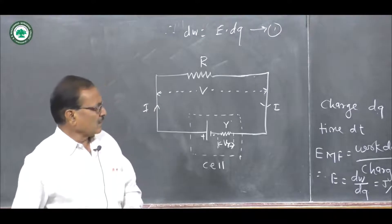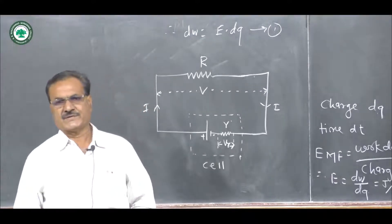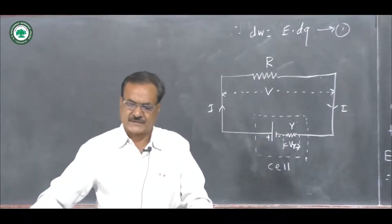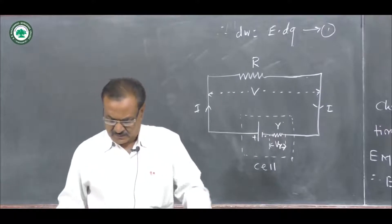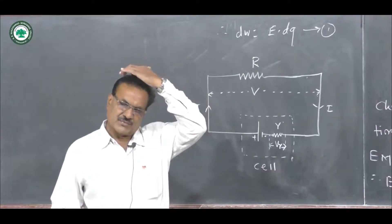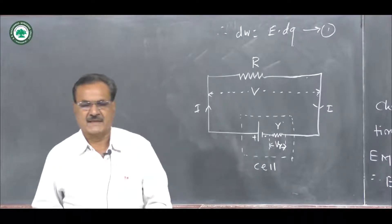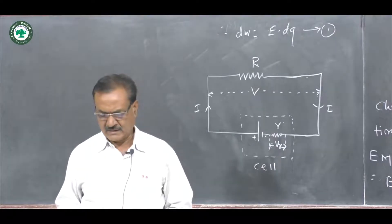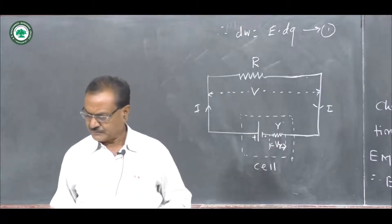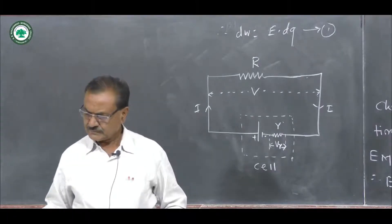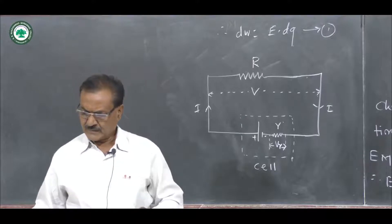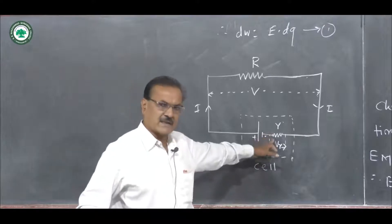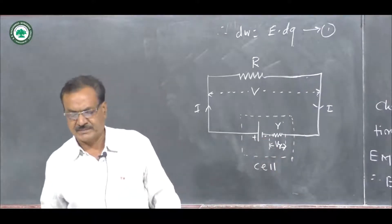For understanding internal resistance: every source of electricity has its own resistance depending upon its composition, which is called the internal resistance. The internal resistance is denoted by small r in the circuit, and across it the potential difference is V_R.